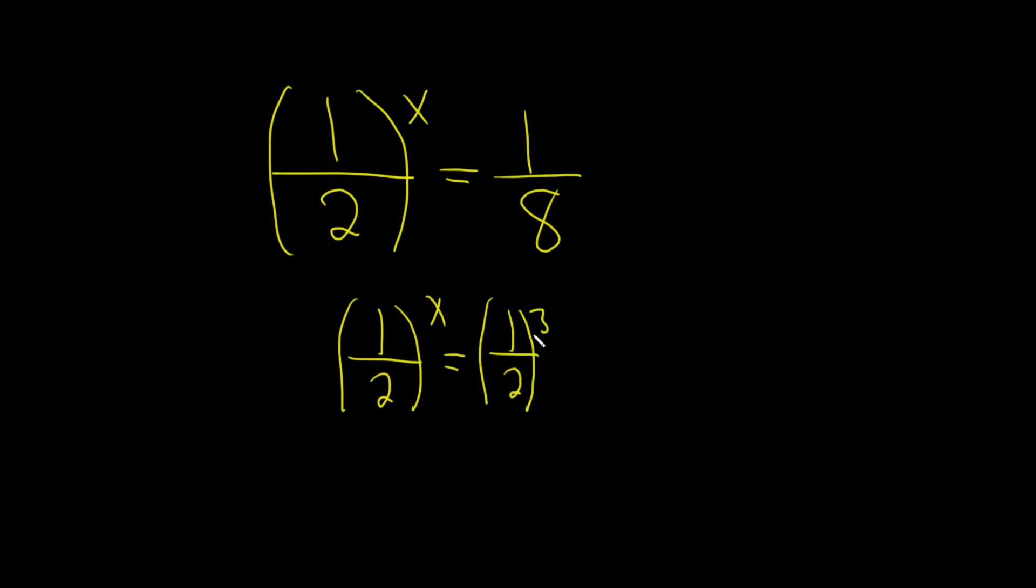And the reason is, if you work this out, if you take 1 half and you cube it, this is the same thing as 1 cubed over 2 cubed, which is the same thing as 1 over 8, so everything checks.